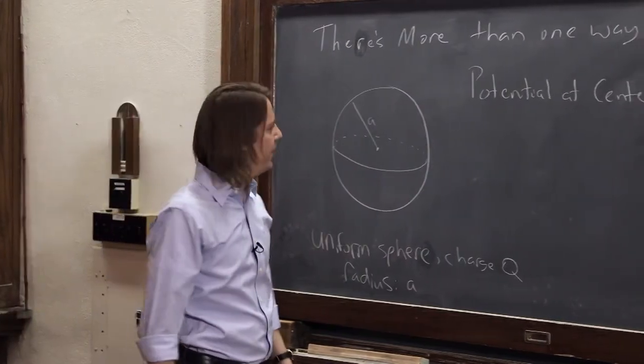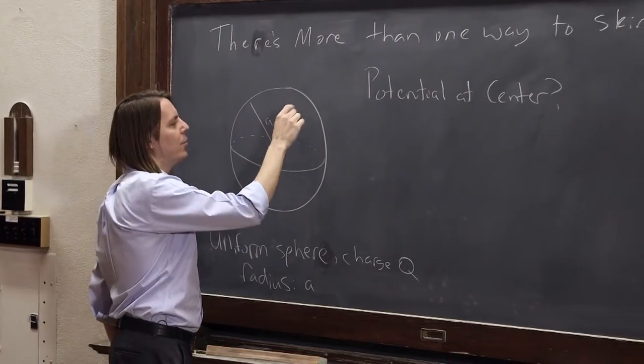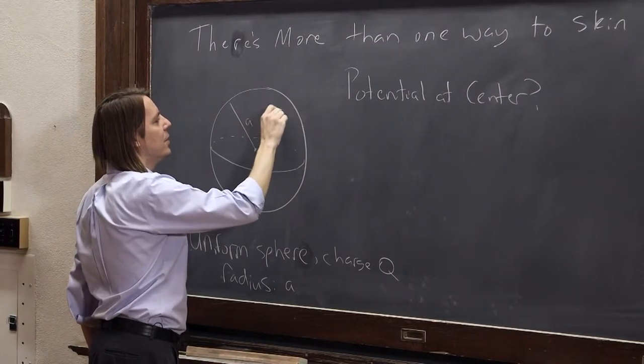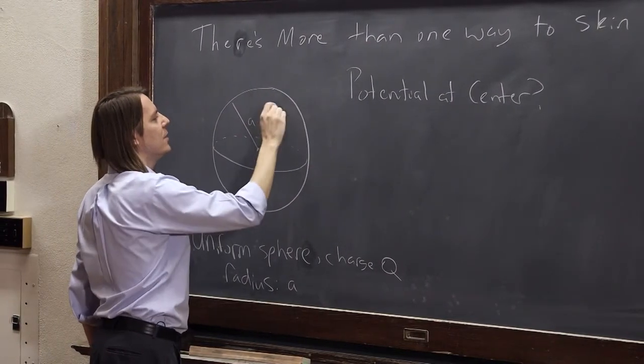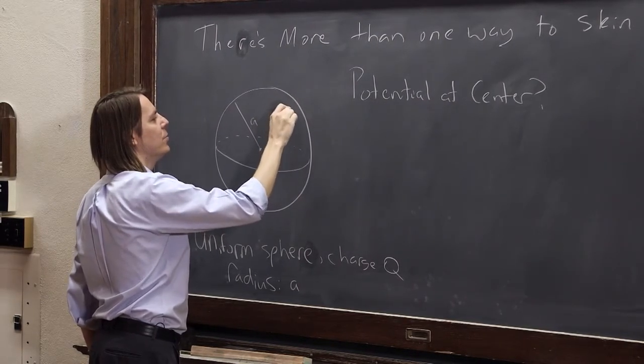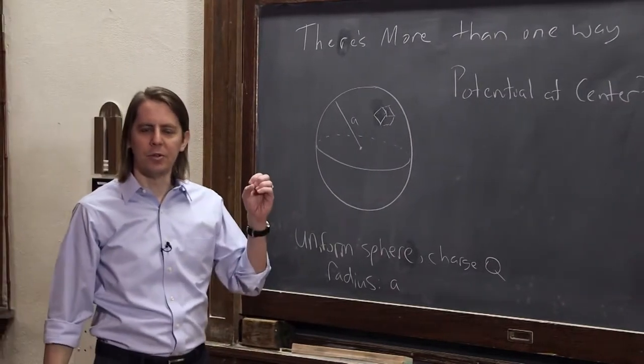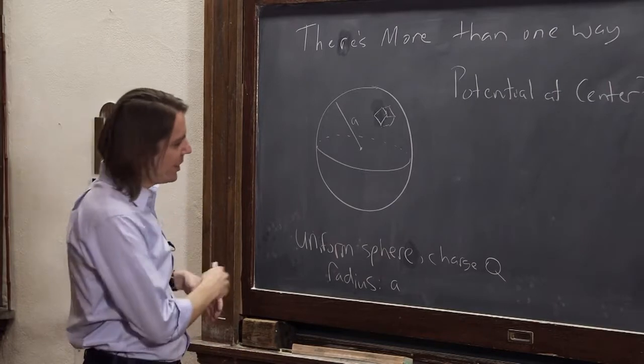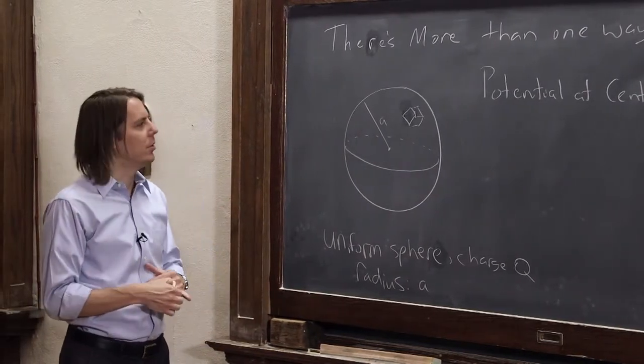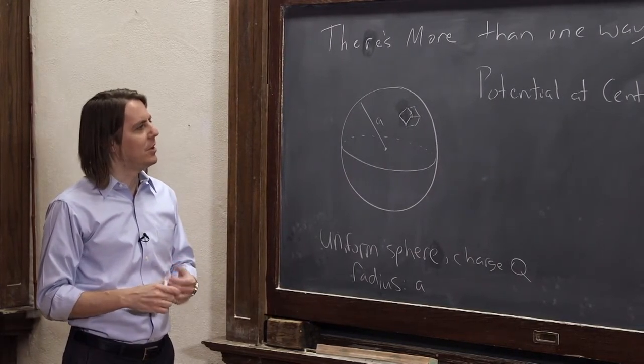But this would be not a fun integral to do, because you'd have this point, and you have to think about little volumes of charge out here. Inside the sphere, you'd move in spherical coordinates with three angles. You have to make a little differential volume element in three dimensions. It's doable. There's nothing wrong with doing it that way. You can add those up and get the potential.